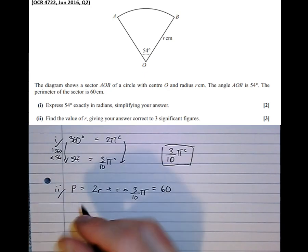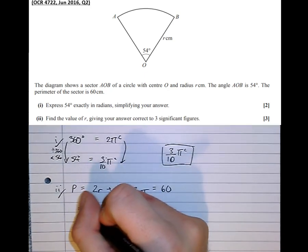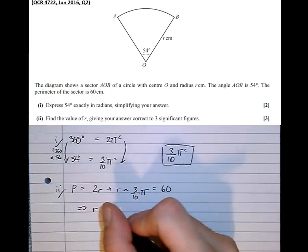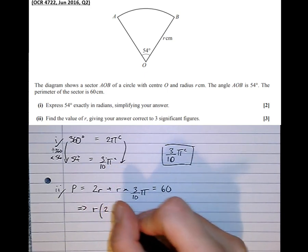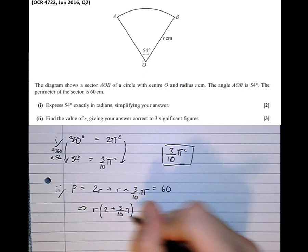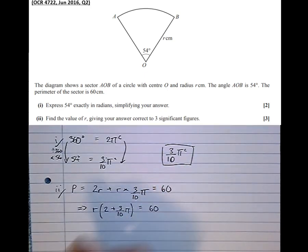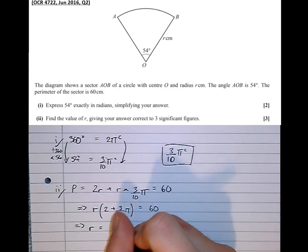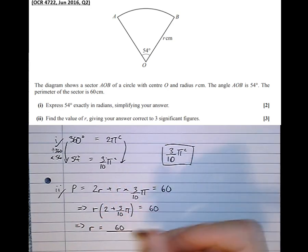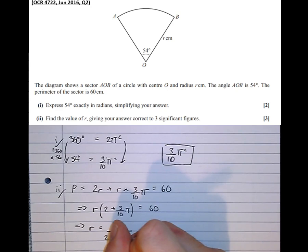So now let's gather everything up. That means that if we take R out as a factor, 2 plus 3 tenths π equals 60. And finally, if we divide by what R has been times by, 2 plus 3 tenths π, we get R equals 60 over 2 plus 3 tenths π.